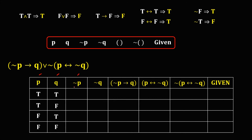For the NOT P column, from P: the negation of true is false, the negation of true is false, the negation of false is true, and the negation of false is true. For the NOT Q column, from Q: the negation of true is false, the negation of false is true, the negation of true is false, and the negation of false is true.